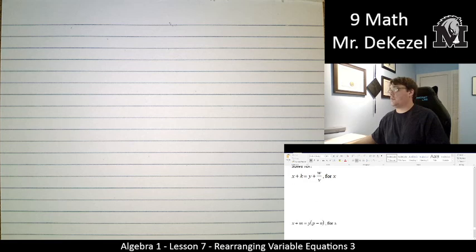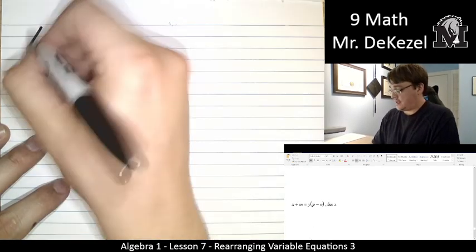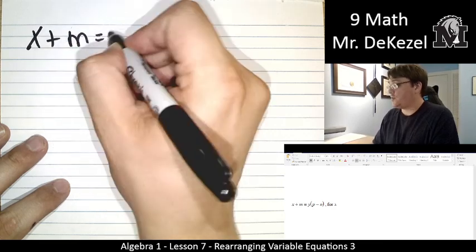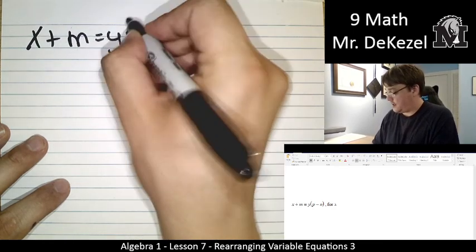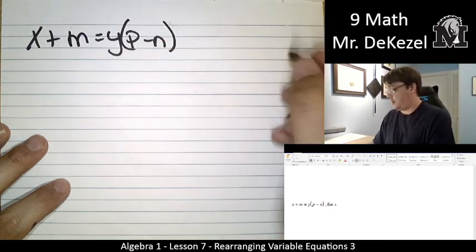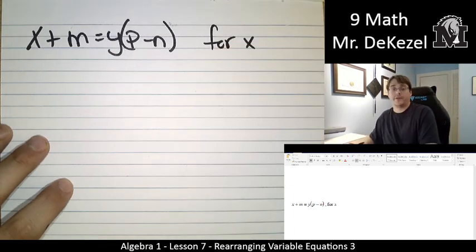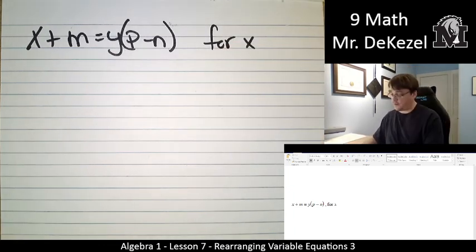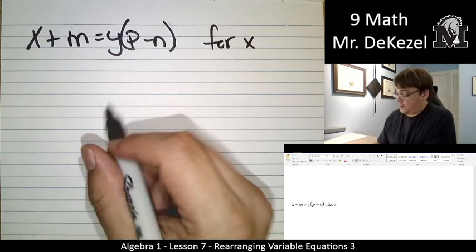Alright, let's hope they get more difficult. Maybe they won't. We have x plus m is equal to y times p minus n. And it looks like, again, we're solving for x, but we want to get rid of the brackets. Brackets are not our friend when we're talking about variable equations.